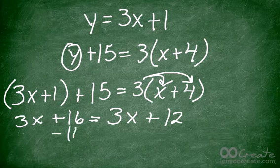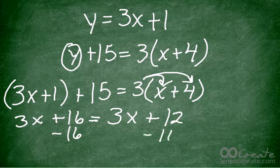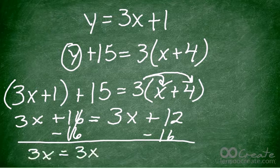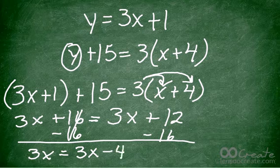So if you don't believe me, watch this. I'm just trying to solve for x. I have 3x equals 3x minus 4. You can already tell that's not true. 3x is not equal to 3x minus 4.